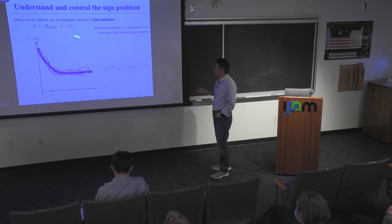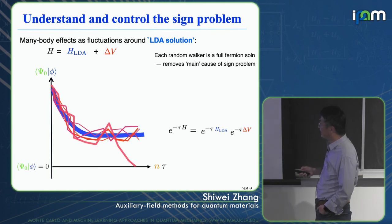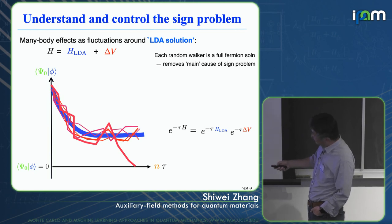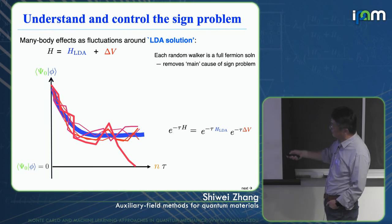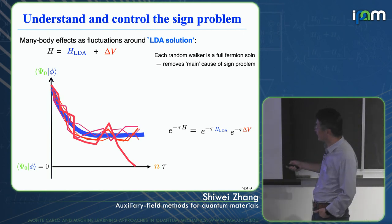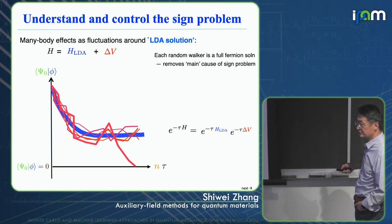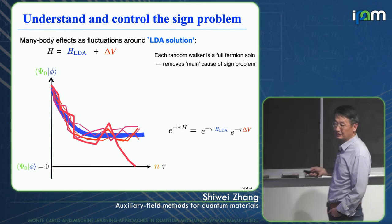To understand how the sign problem happens and how we control it: as the walk proceeds, a walker could reach zero overlap with the ground state wave function. Since it's continuously evolving, it can also go below zero. You can think of this trajectory as like water — there's a reflection below that is equally valid. Another family of projections with everybody having a minus sign is just as good. Once a walker crosses zero, it can join the other family, and asymptotically you get a linear combination of these, which produces a sign problem.